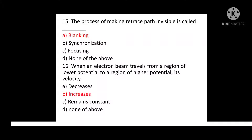Question No. 16: When an electron beam travels from a region of lower potential to a region of higher potential, its velocity? Option A: Decreases. Option B: Increases. Option C: Remains constant. Option D: None of the above. Correct answer is Option B: Increases.